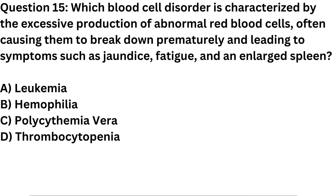Question 15. Which blood cell disorder is characterized by the excessive production of abnormal red blood cells, often causing them to break down prematurely and leading to symptoms such as jaundice, fatigue, and an enlarged spleen? A. Leukemia. B. Hemophilia. C. Polycythemia vera. D. Thrombocytopenia.